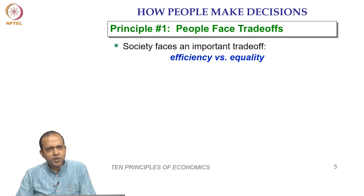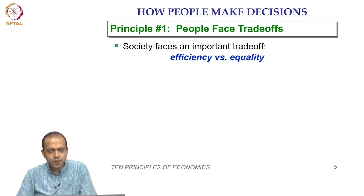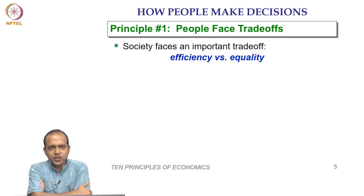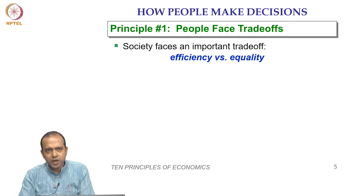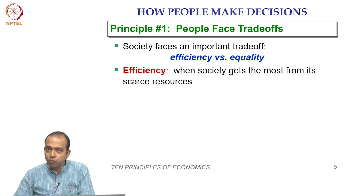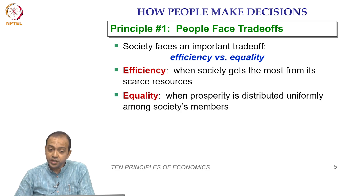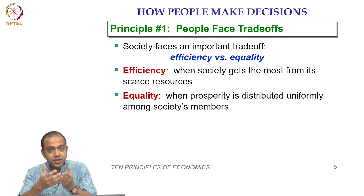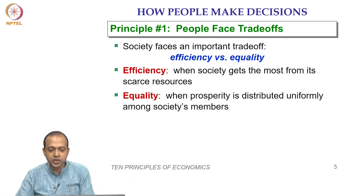Society sometimes also faces a trade-off between efficiency and equality. Efficiency means allocating resources so that we get maximum satisfaction. When society gets the most from its scarce resources, efficiency is achieved. Equality means the prosperity — the size of the economic pie — is distributed uniformly among all society's members.